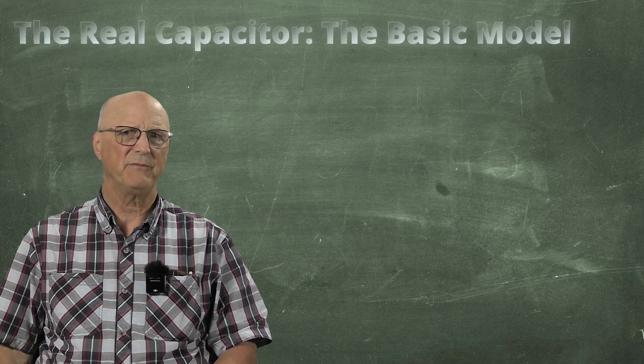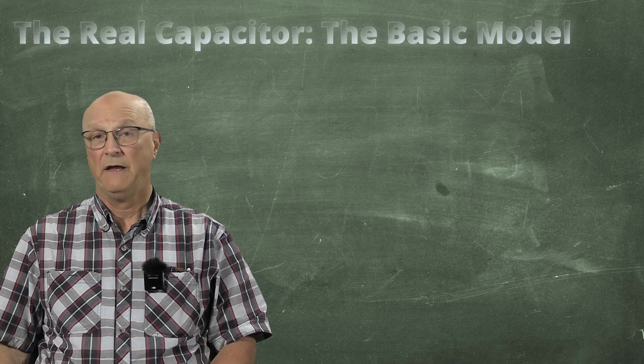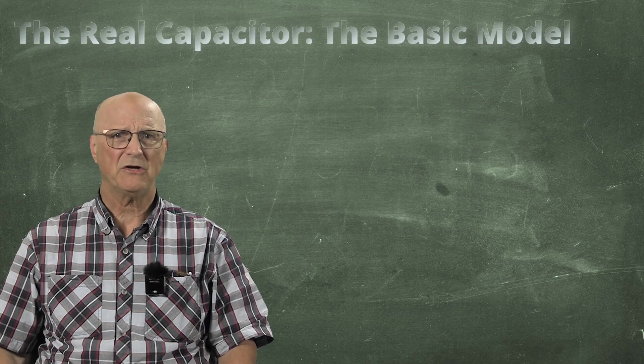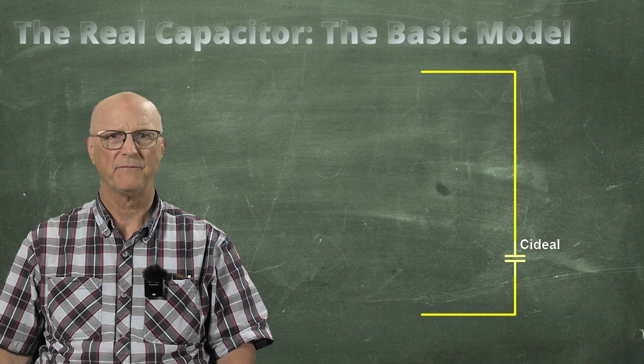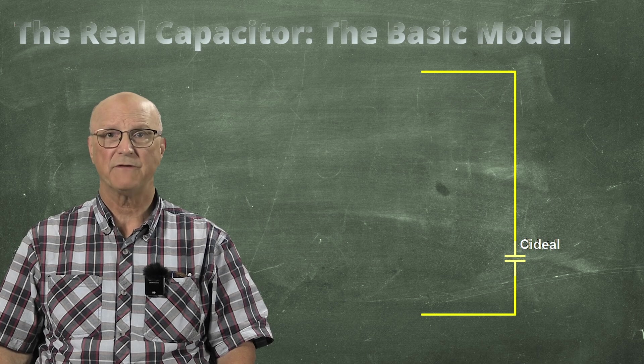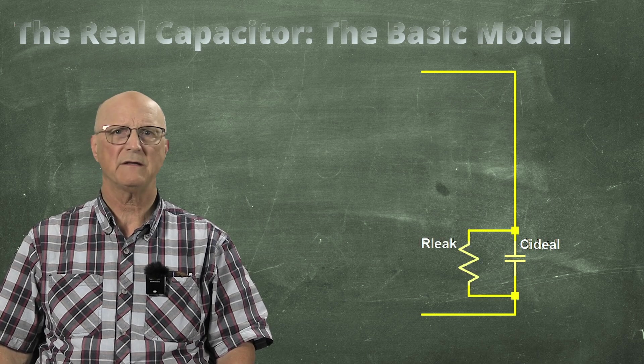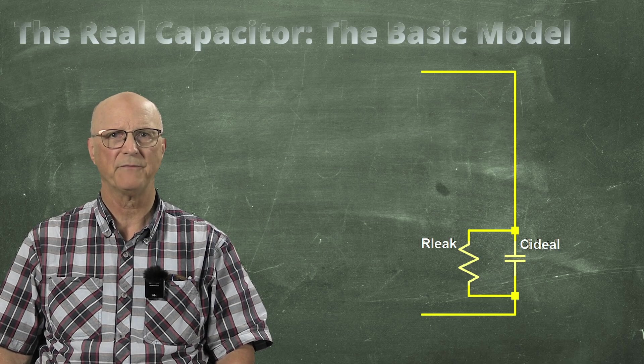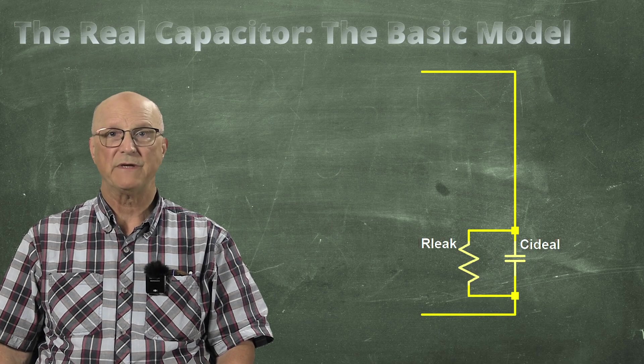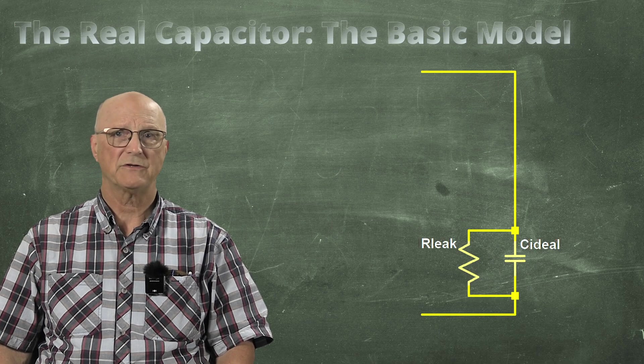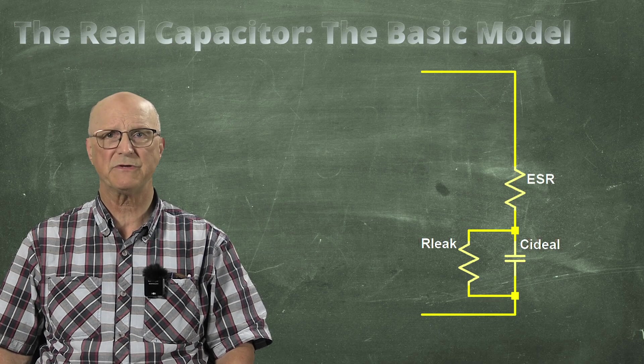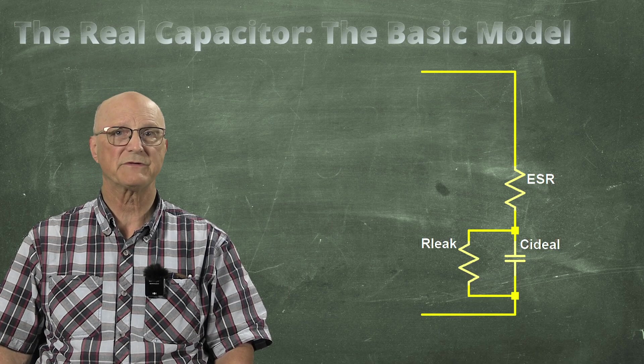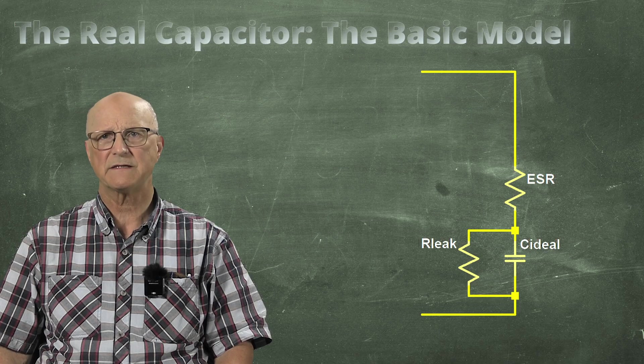So let me build a simple model of a real-life capacitor with you. The complete model is much more complicated. Starting at the core, we have the ideal capacitor. The reality of the leakage of the dielectric material is represented by a large value resistor in parallel with the ideal capacitor in this capacitor model. The reality of the resistance of all of the conductors and the internal connections is represented by a series resistor in the basic capacitor model. This is what we call the equivalent series resistance, or ESR, of the capacitor.